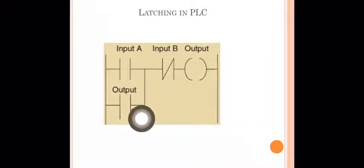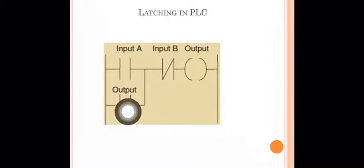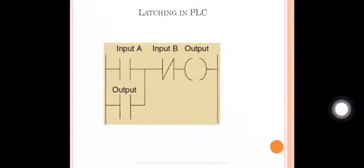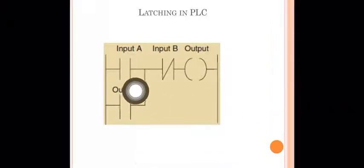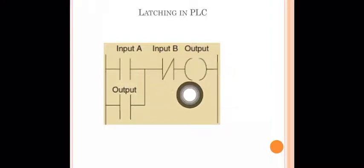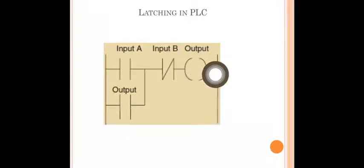When the output is on, the parallel switch with the same address also turns on. So when input A is released and returns to normally open state, the output continues running through this parallel feedback switch. This is how the latch circuit maintains its on state.